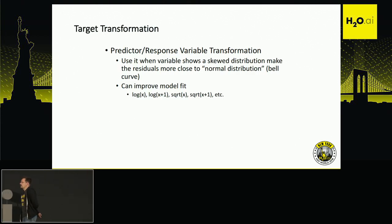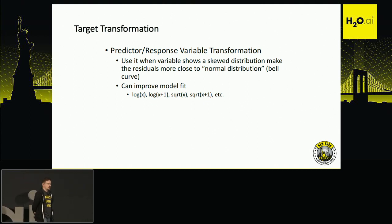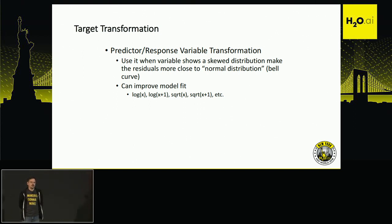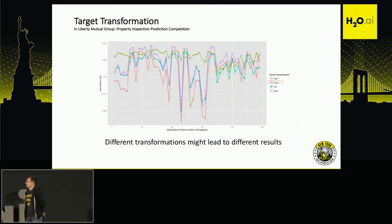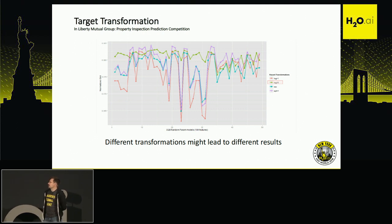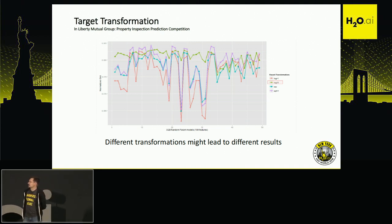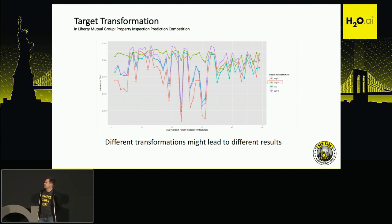Machine learning models often make strong assumptions about the nature of your target variable, especially for regression problems. Applying different target transformations can be helpful. For example, in one Kaggle competition, applying a log base-10 transformation to the target variable was very stable across different XGBoost models — shown as the green line on the plot — while other approaches varied a lot and were less reliable.